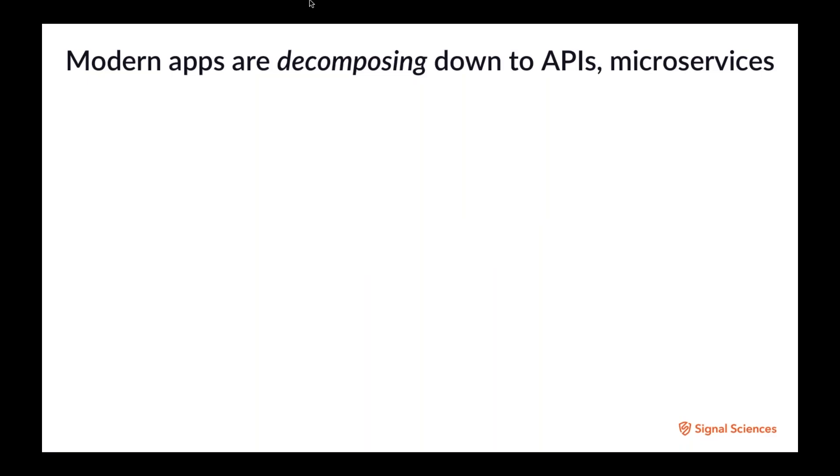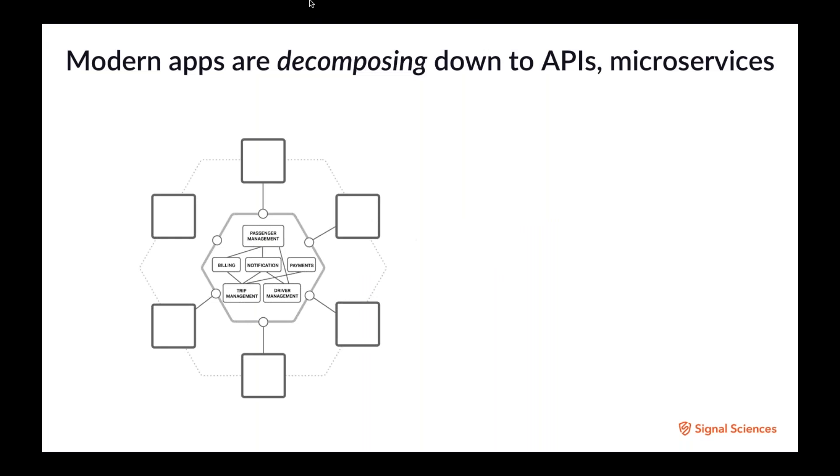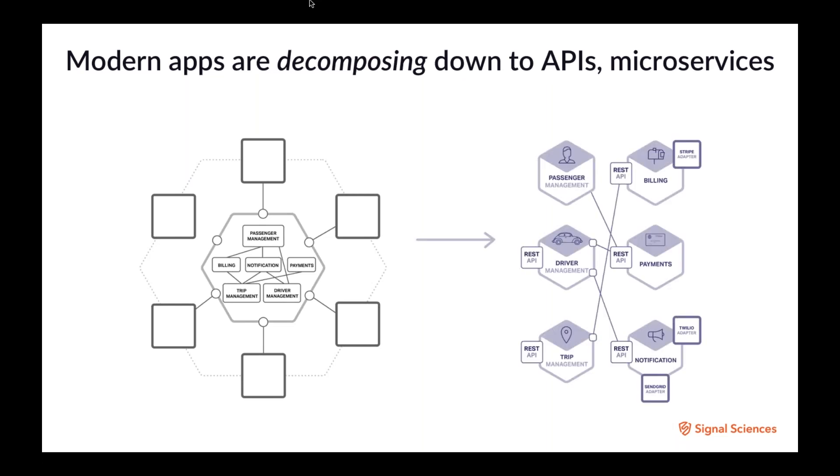So let's talk about modern architectures. Modern apps are decomposing down into APIs and microservices. On the left here, this is your typical legacy monolithic application where all the functions were coexisting together very closely together. And what we've seen over the last decade is that on the right here, that this is your typical deployed, distributed application. Here, it's a ride sharing application, and you have all these different APIs that are basically being triggered when certain things need to happen. So if you want to talk about passenger management, the application needs to manage drivers out on the road. It needs to make a call to basically send a notification, et cetera. Whatever functions that the app needs to execute, it basically does them on the fly with these different APIs.